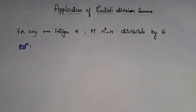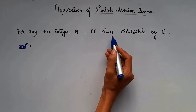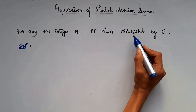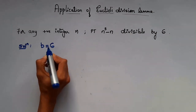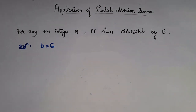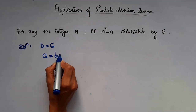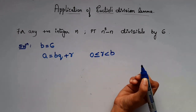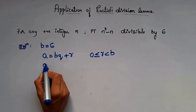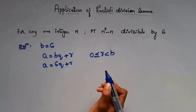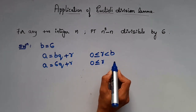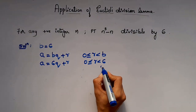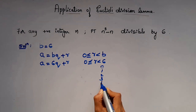So now let's see this next problem: for any positive integer n, prove that n³ - n is divisible by 6. From the question we know b is 6, that is divisible by 6. From Euclid's division lemma, we know a = bq + r where r is greater than or equal to 0 but less than b. In this case, a = 6q + r, so r can take the values 0, 1, 2, 3, 4, or 5.